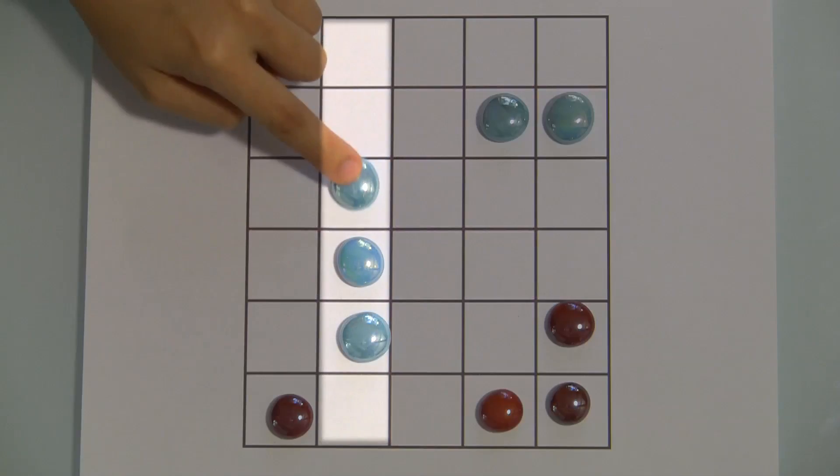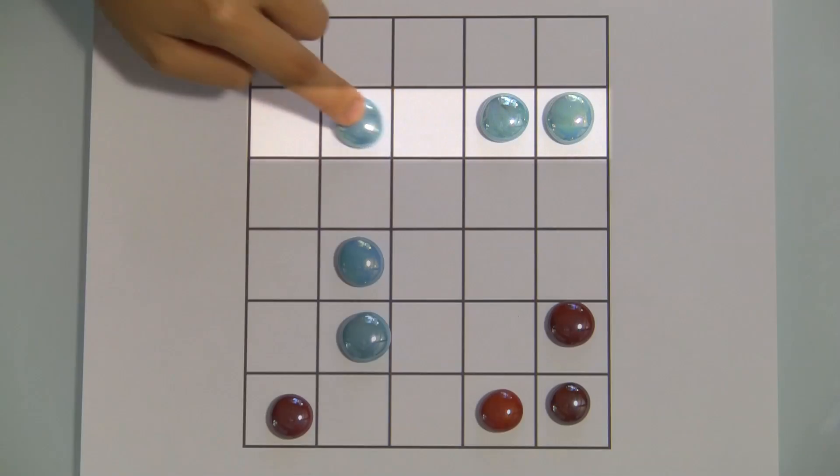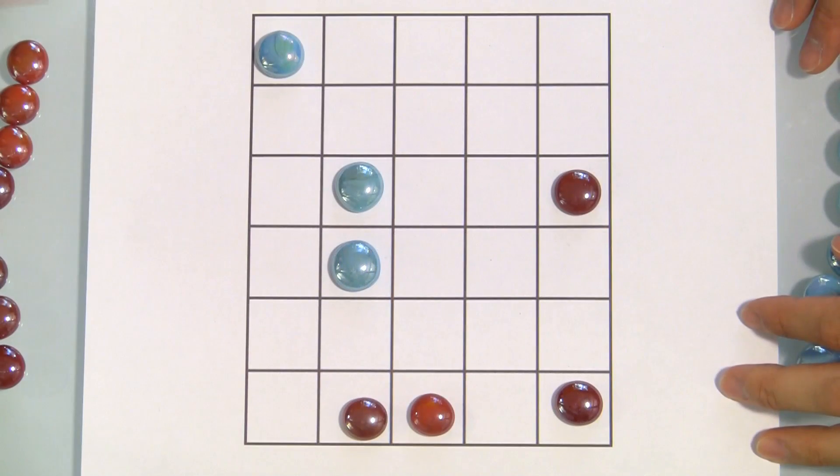Rows of three can be made vertically or horizontally, but pieces may never move diagonally.